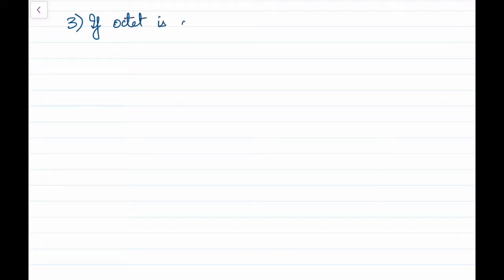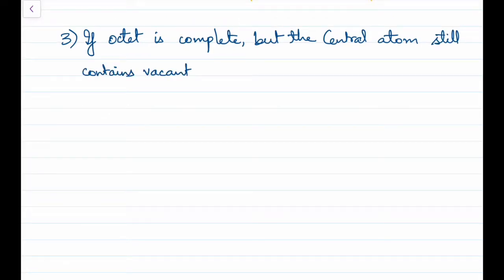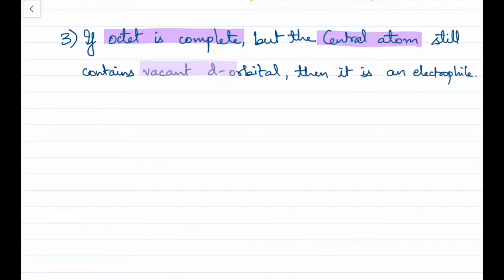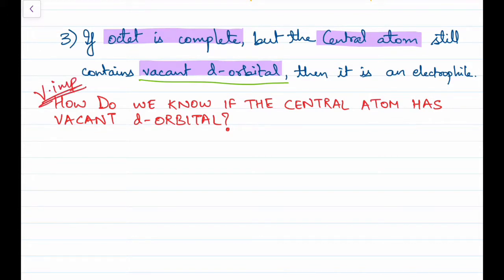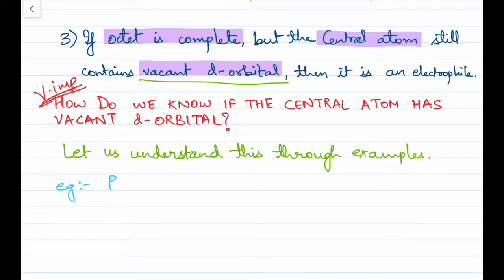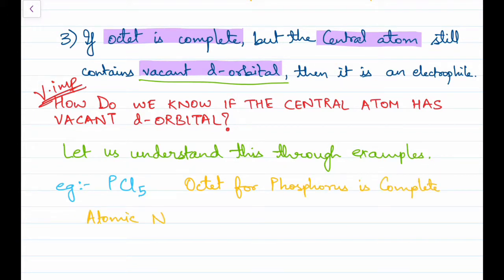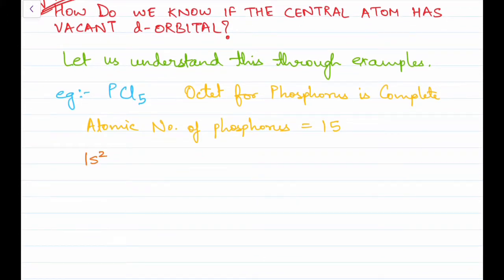The third condition — and actually the most important — is: even if the octet is complete, but the central atom still contains vacant d orbitals, then it is an electrophile. This can be confusing, so we'll explain it thoroughly. The first example is PCl5. The octet for phosphorus in PCl5 is complete. The atomic number of phosphorus is 15 and the electronic configuration is 1s² 2s² 2p⁶ 3s² 3p³.